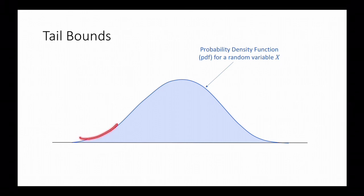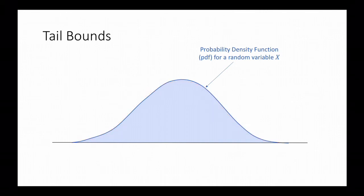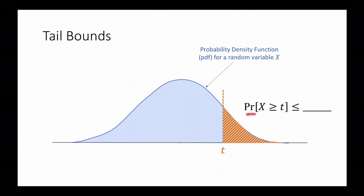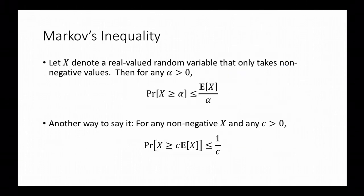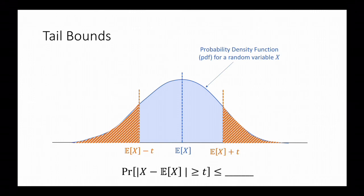If this is the probability density function for a random variable x, we might want to say something like, it's not very likely that x is bigger than t. Or we might want to say something like, it's not very likely that the deviation between x and its expectation is greater than t.